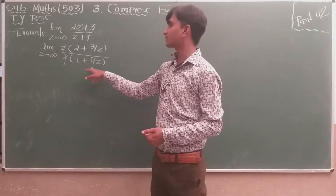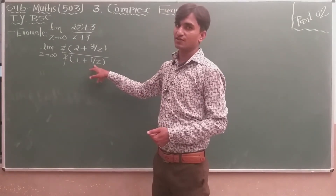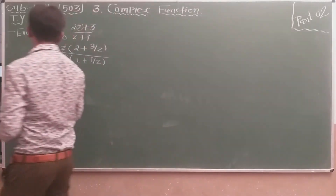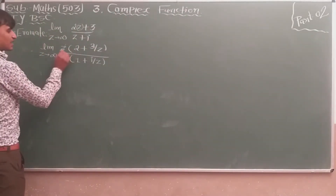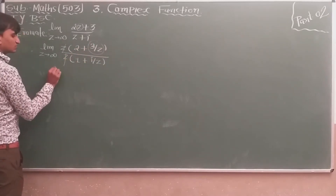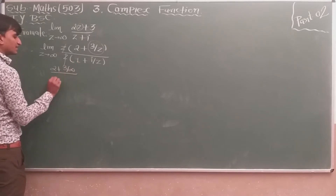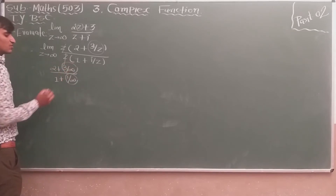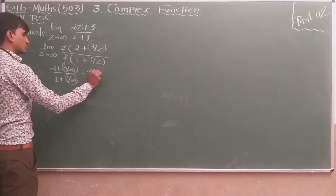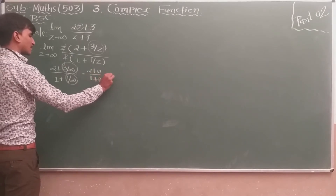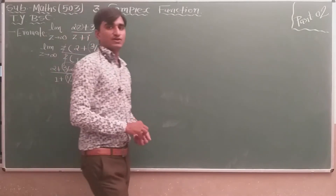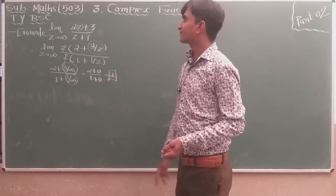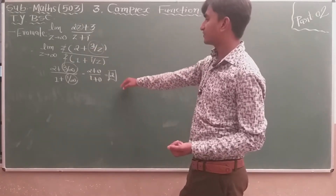Now, if we put infinity at the place of z, we are not getting the infinity/infinity form. So after taking z common and cancelling, we put the limit. 3/infinity = 0 and i/infinity = 0, so we get (2 + 0) / (1 + 0) = 2. This is the easy question about the limit of complex function, and the answer is 2.